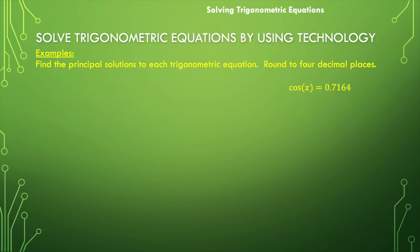So in this case, there is no solution. The cosine of x is equal to 0.7164.